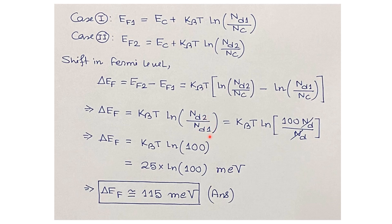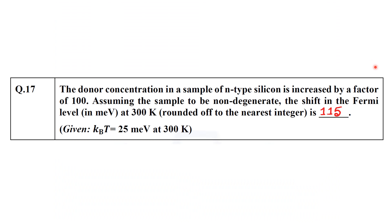Since ND2 = 100·ND1, the ND terms cancel and ΔEF = kBT·ln(100). At 300 Kelvin, kBT = 25 milli electron volt, so ΔEF = 25·ln(100) ≈ 115 milli electron volt. This is the final answer: the shift in the Fermi level at 300 Kelvin, rounded to the nearest integer, is 115 milli electron volt.